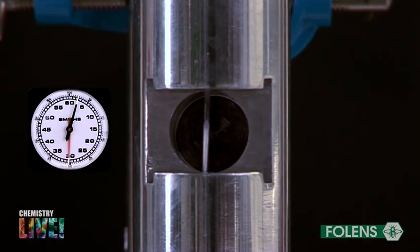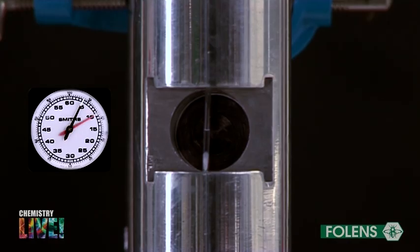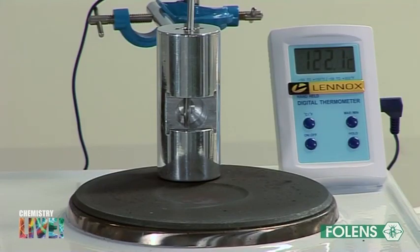Note the reading on the thermometer at which the crystals begin to melt. Also note the temperature at which the crystals finish melting. These two temperatures are the melting point range of the benzoic acid.